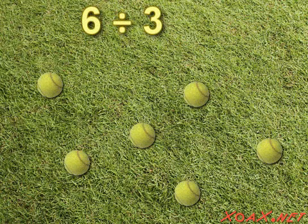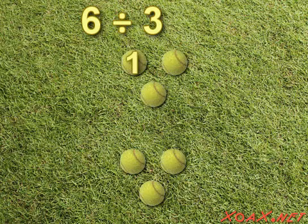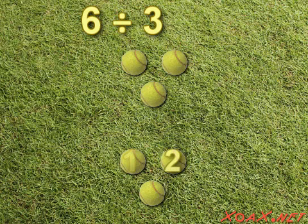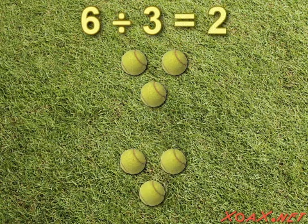we can count out six objects like tennis balls: one, two, three, four, five, six. Next, put them into groups of three: one, two, three — one, two, three. Then we get the answer by counting the number of groups, which is one, two. So six divided by three equals two.